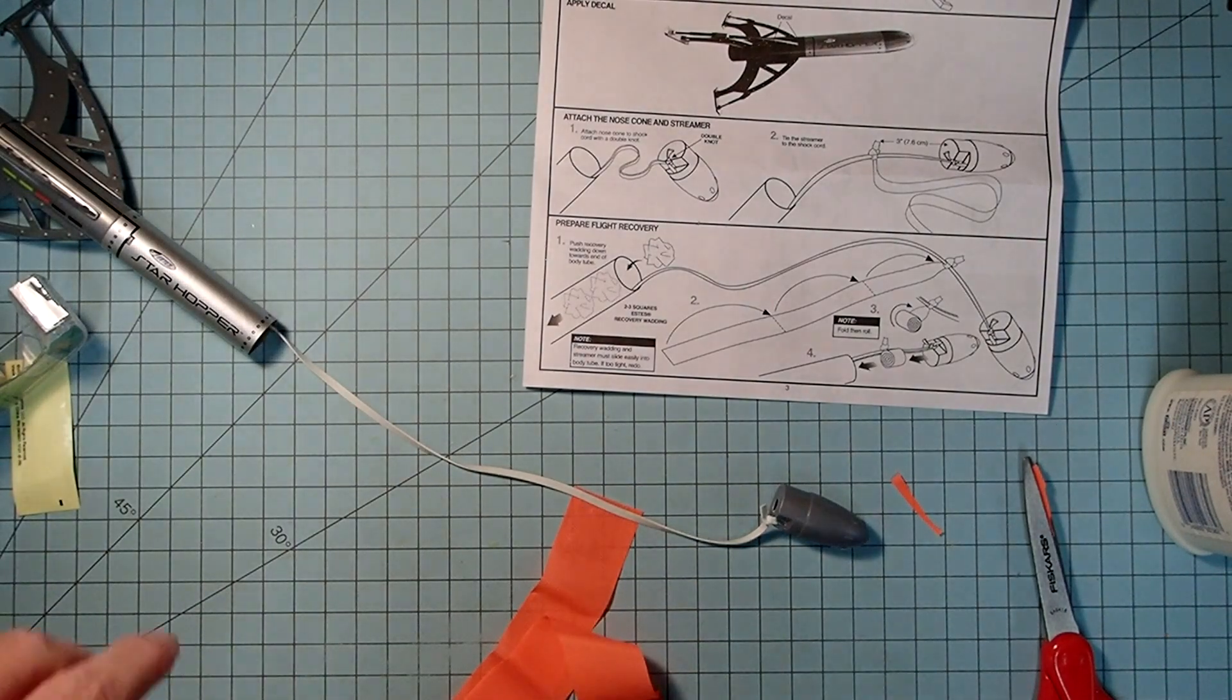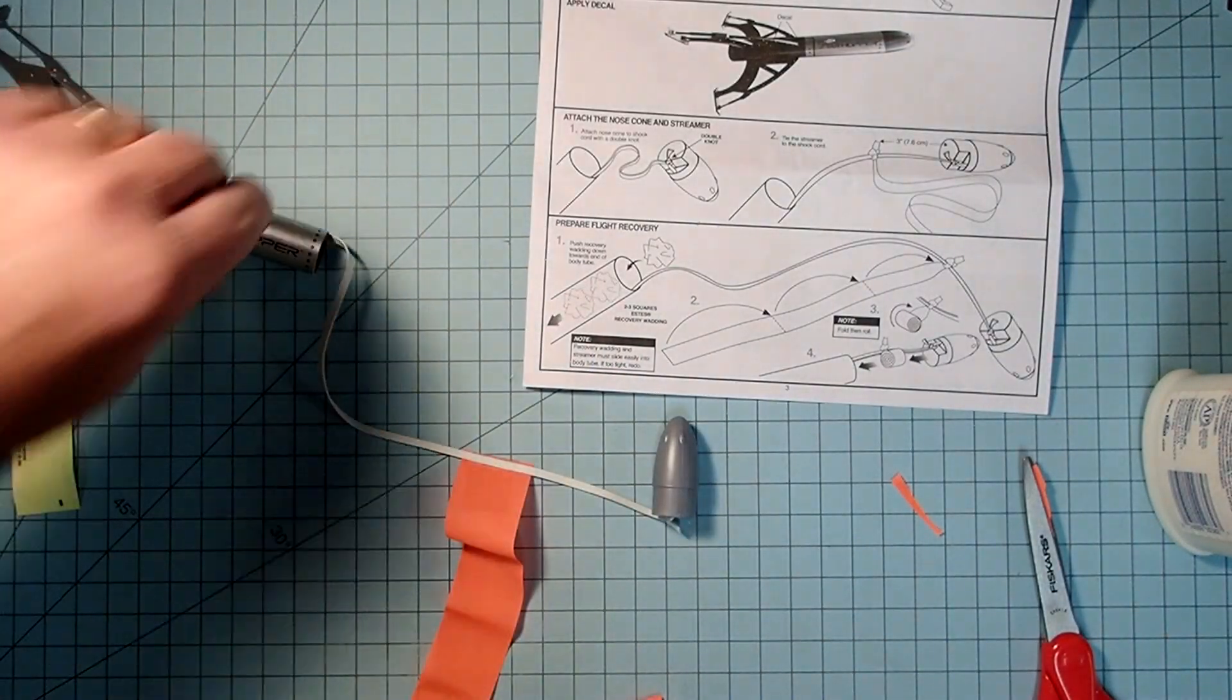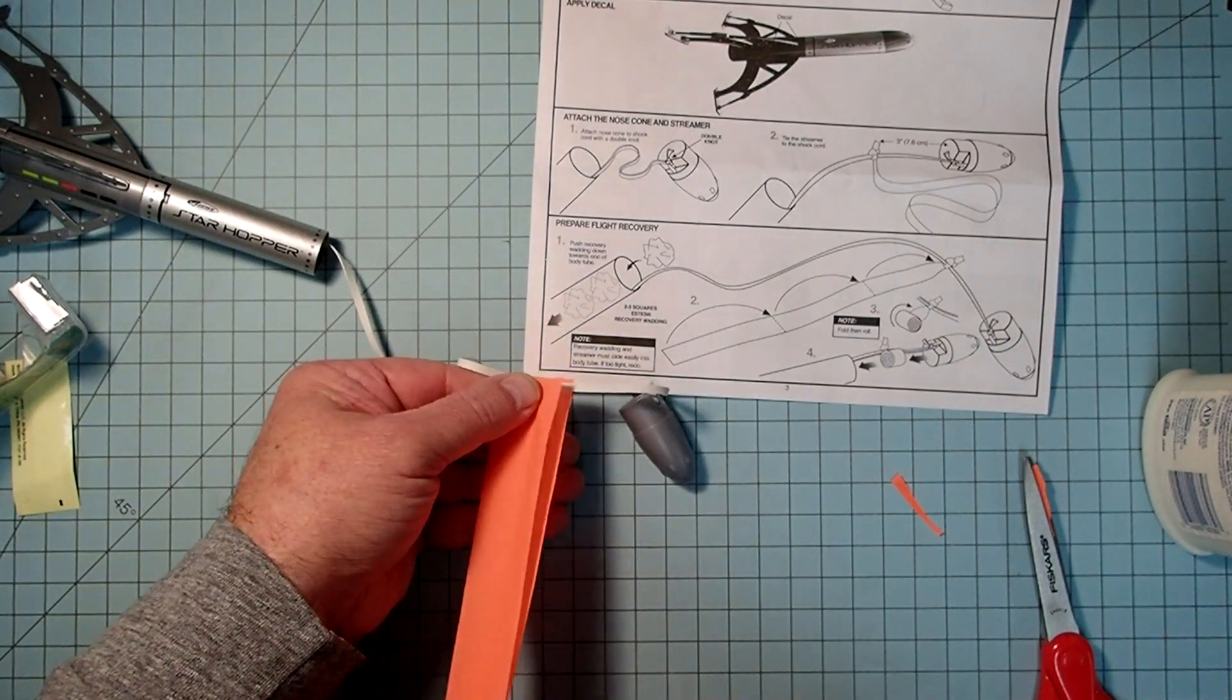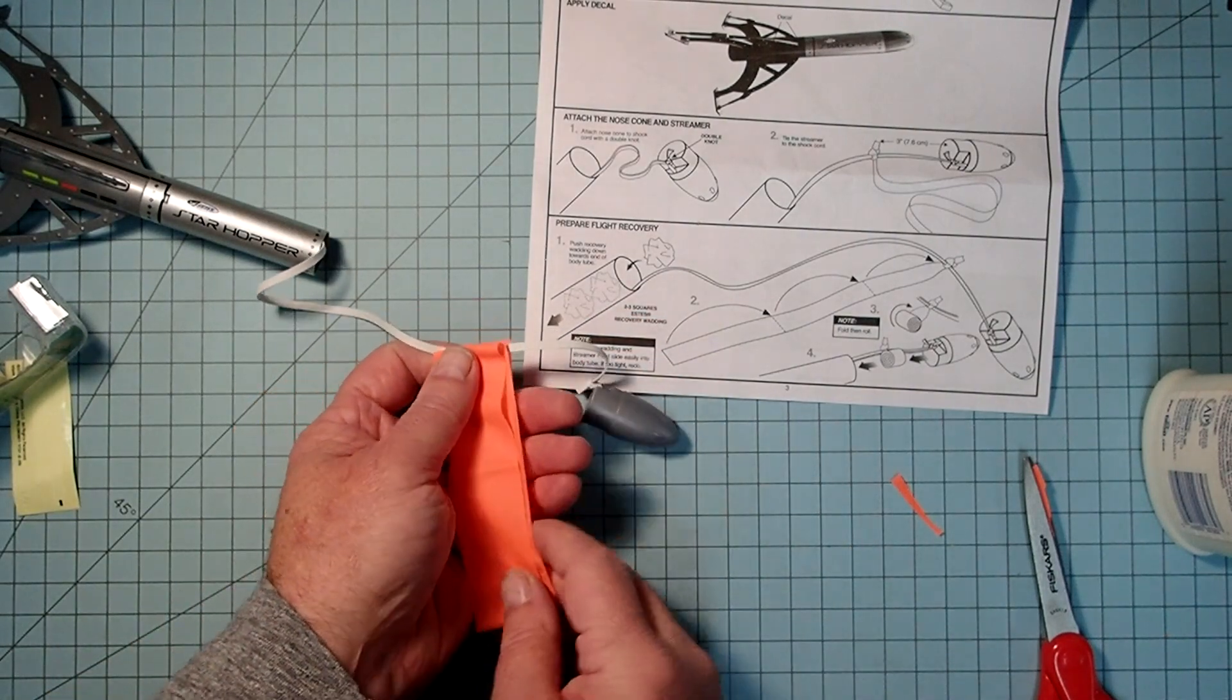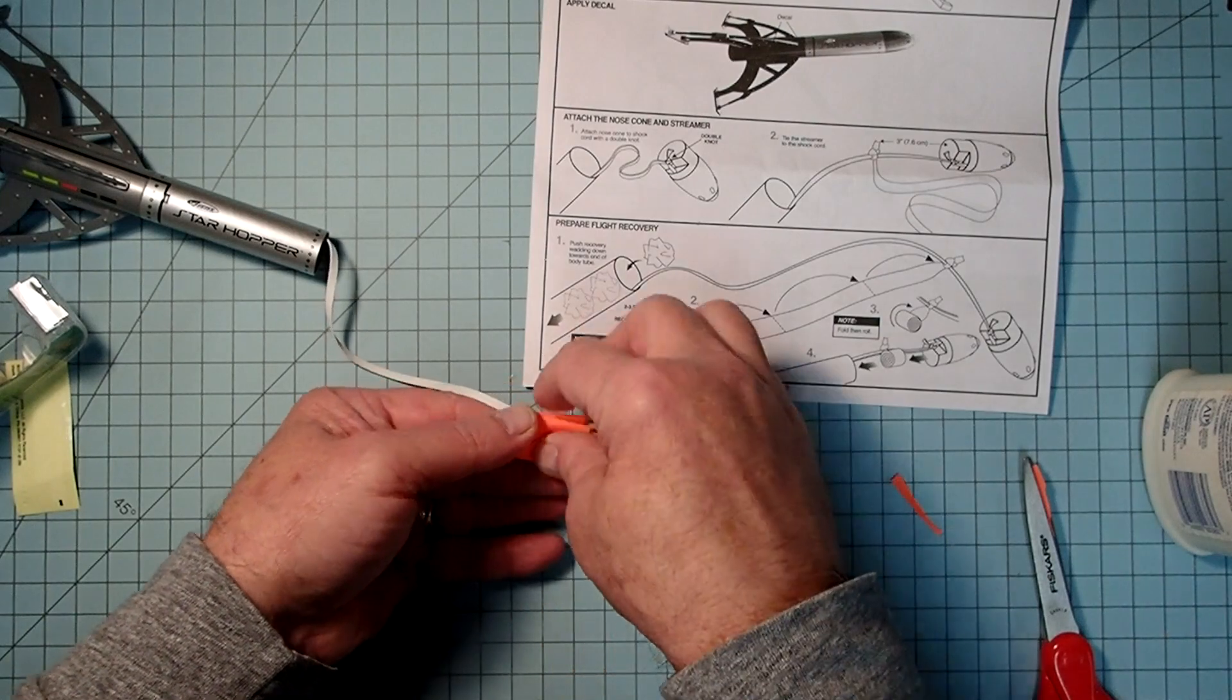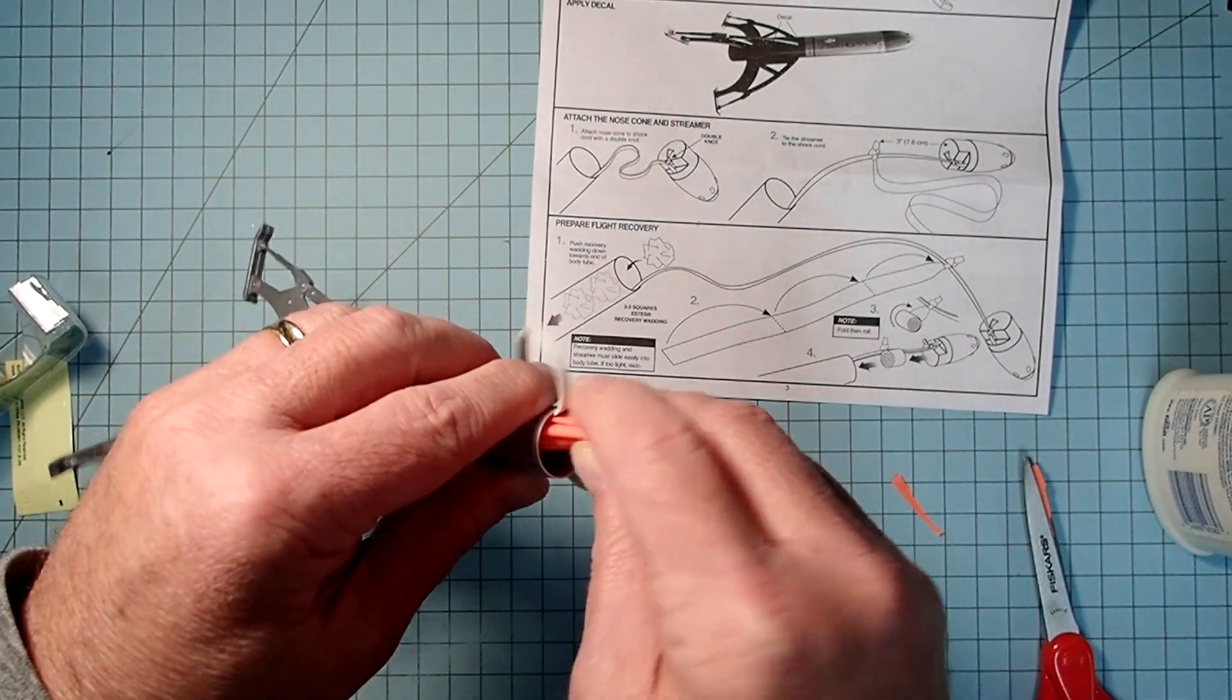Now, if you're ready to launch, what you'll do is put two pieces of recovery wadding down inside here, loosely crumpled. And then the streamer, start by just folding this over on itself lengthwise a few times. I don't recommend trying to roll it up from the end. It's really tedious and it actually takes it longer to deploy that way. So just keep folding it end over end until you get to a little tiny package here. Now, I'm not putting recovery wadding in mine because I'm not going to launch it right away.